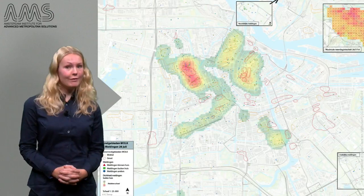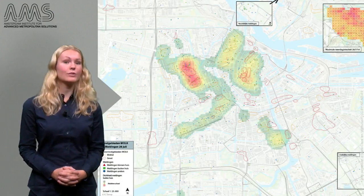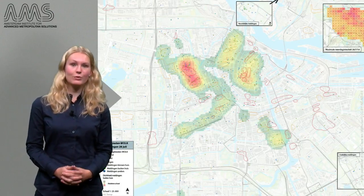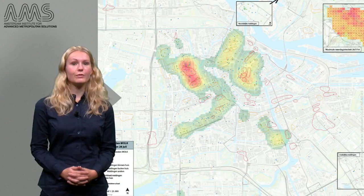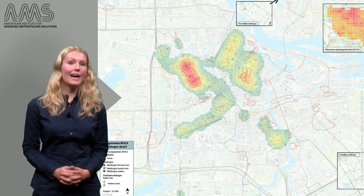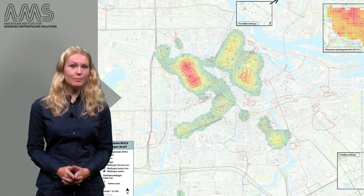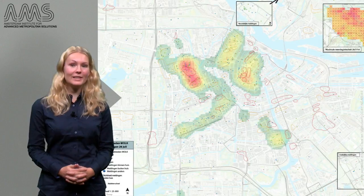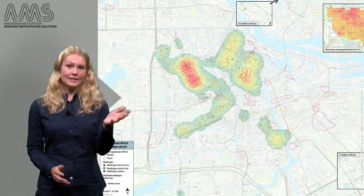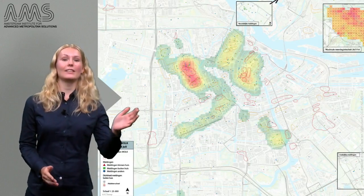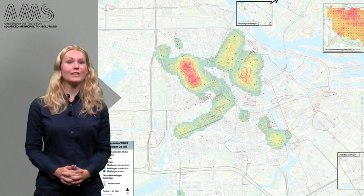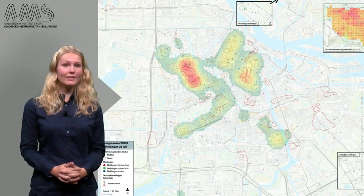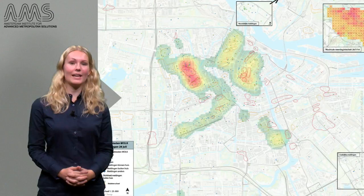In the case of the heavy rainfall event on July 28, 2014, an overview of the flooding reports was made by combining the official complaints with messages on social media such as Twitter and Facebook. This map clearly illustrates how citizens' reports can be used to determine the severity of flooding in an urban area.